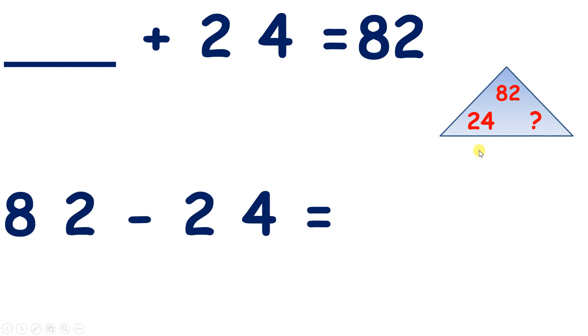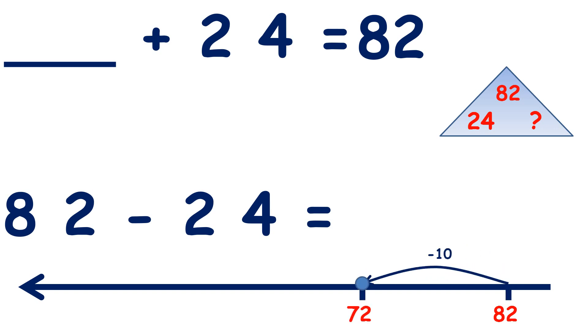So let's find that missing number by subtracting 24 from 82. So we start on 82. Subtract 10, we get 72. Subtract another 10, and we get 62. So we've subtracted our two tens.